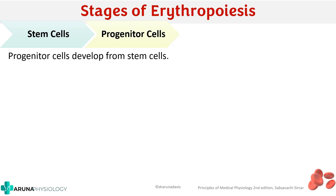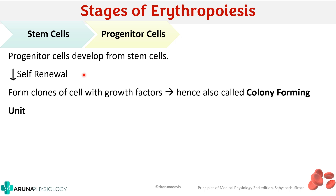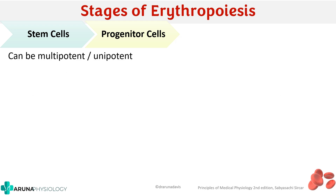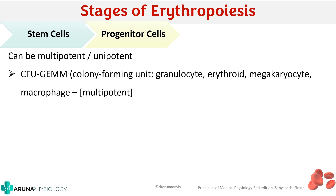Stem cells differentiate to form the progenitor cells, which are more differentiated than stem cells. An important characteristic of progenitor cells is that their self-renewal capability is lesser compared to stem cells, but they have more differentiation. Another key feature is that they form clones of cells with the help of growth factors — that is why they are also called colony forming units, or CFU. These progenitor cells can be multipotent or unipotent. An example of multipotent is CFU-GEMM — granulocyte, erythroid, megakaryocyte, macrophage.